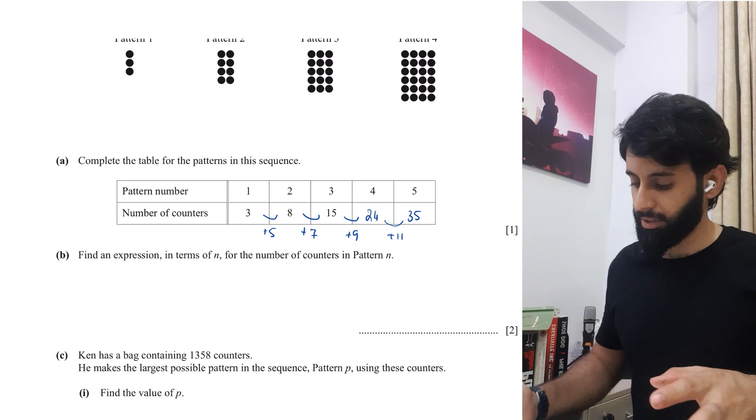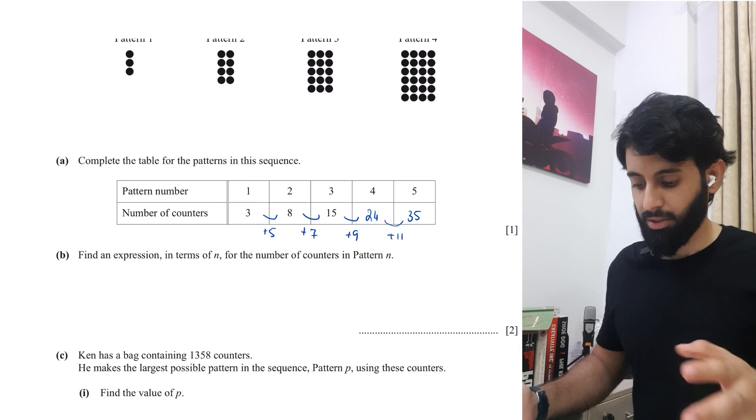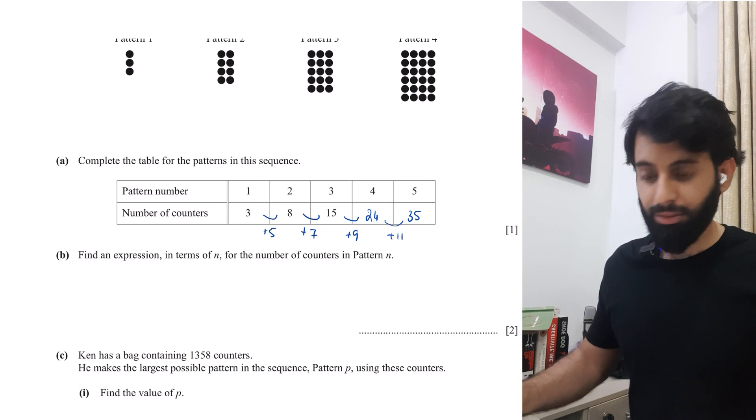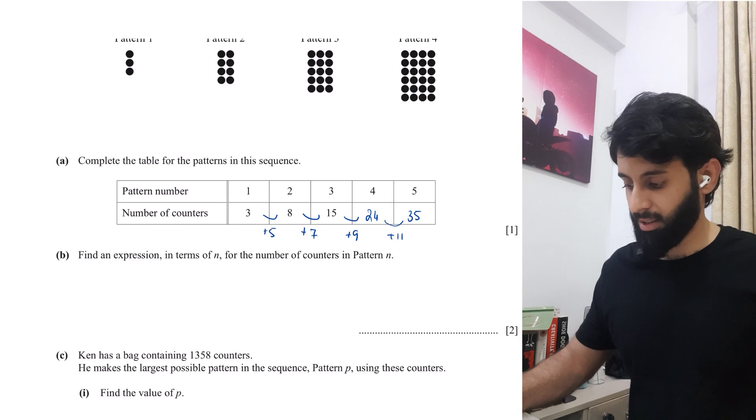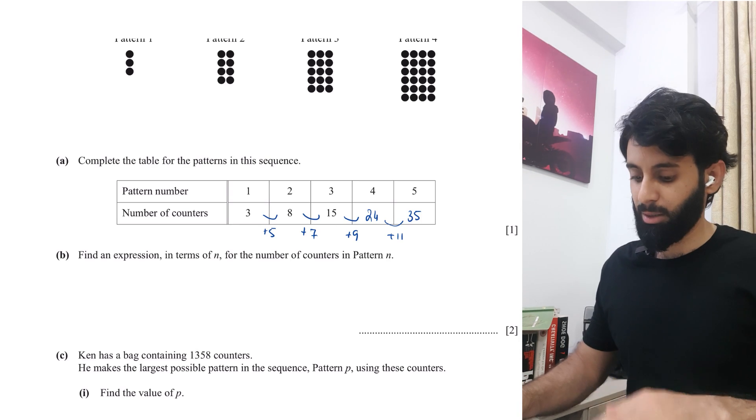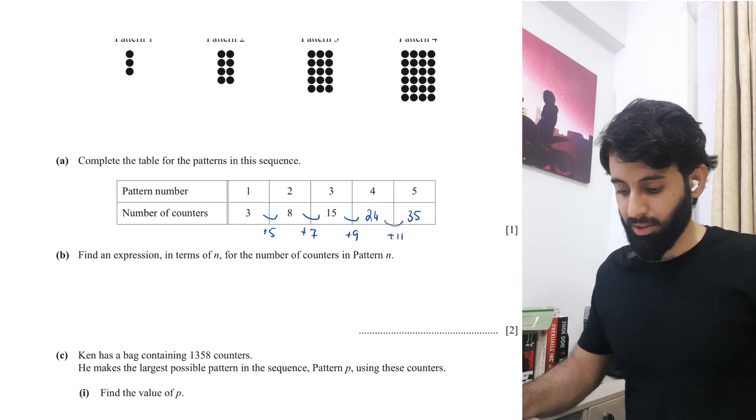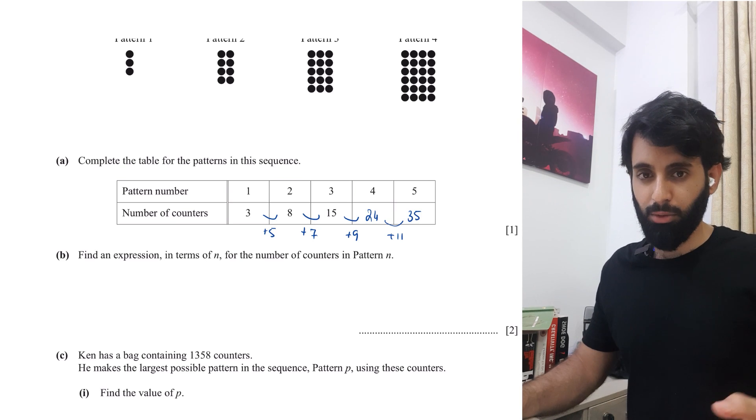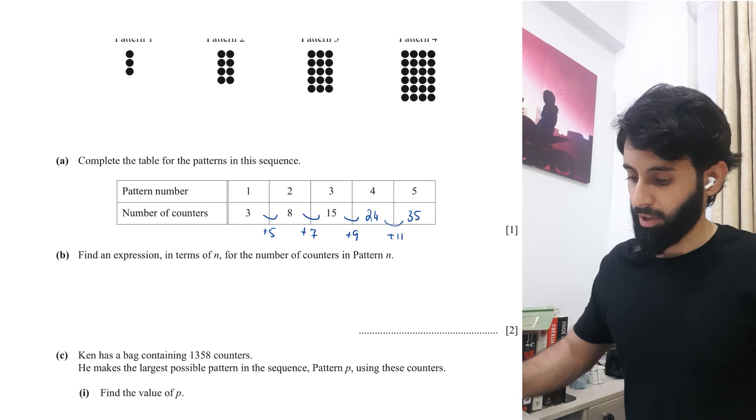So how exactly is this a quadratic sequence? Let's first find that out. So three to eight, we can see the difference is five, eight to 15, the difference is seven, 15 to 24, nine, and then 11. So if the difference of the difference is the same, which is exactly what's happening over here, the difference of the difference is two, then the sequence is a quadratic sequence. And then we'll use the formula for finding the general term for quadratic sequence.